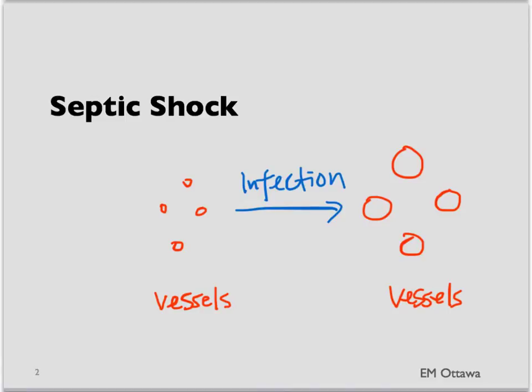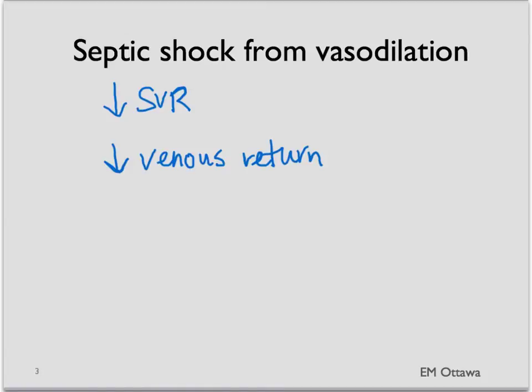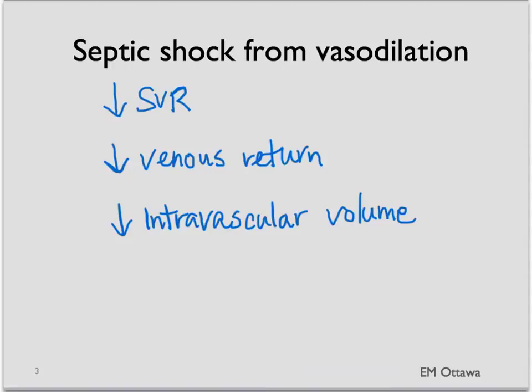First, septic shock. Septic shock occurs where there is an infection that causes significant peripheral vasodilation. Because of the significant peripheral vasodilation, there is decreased systemic vascular resistance. Because of the pooling of the blood in the periphery, there is decreased venous return, and intravascular volume decreases. On the other hand, sepsis can also cause myocardial depression and decreased cardiac output. Those are the reasons that sepsis causes shock.